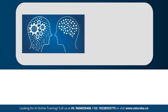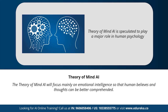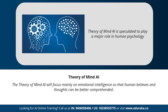Next we have theory of mind artificial intelligence. Theory of mind AI is a more advanced type of AI speculated to play a very important role in psychology. This type of AI will mainly focus on emotional intelligence so that human beliefs and thoughts can be better comprehended. Theory of mind AI has not been fully developed yet, but rigorous research is happening in this area.